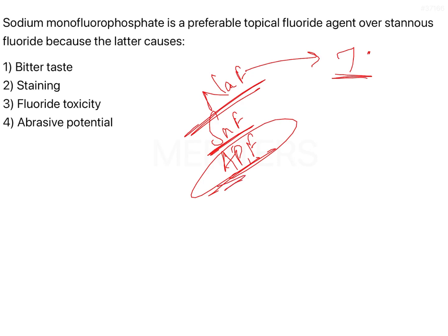APF, on the other hand, because it is acidic in nature, causes etching of the superficial enamel. Because it causes etching, the surface area increases, and because of the increased surface area, more fluoride is actually getting incorporated onto the tooth enamel. As a result, fluorapatite forms much better when APF is used. However, the caries reduction is lesser than that of stannous fluoride.